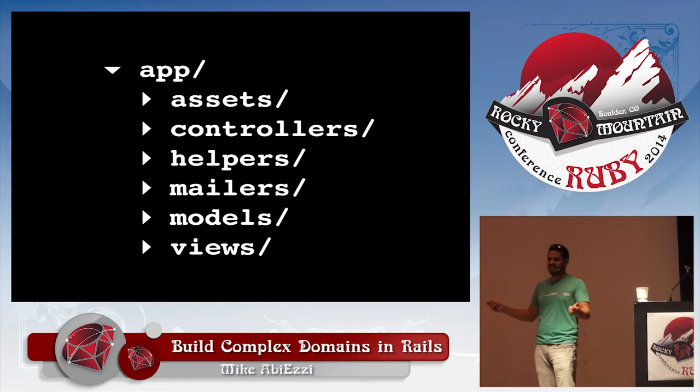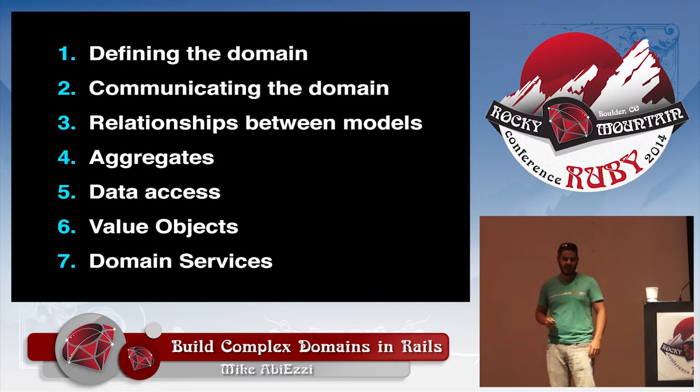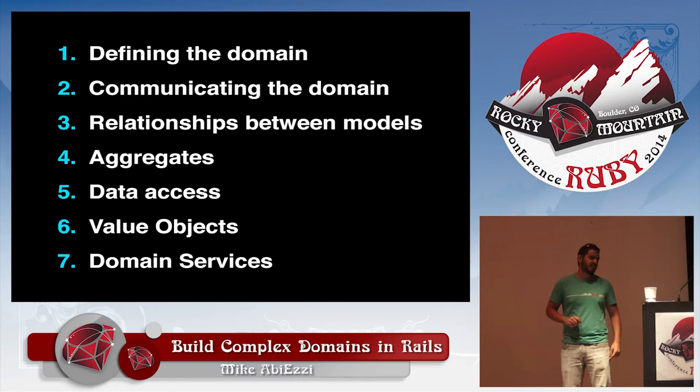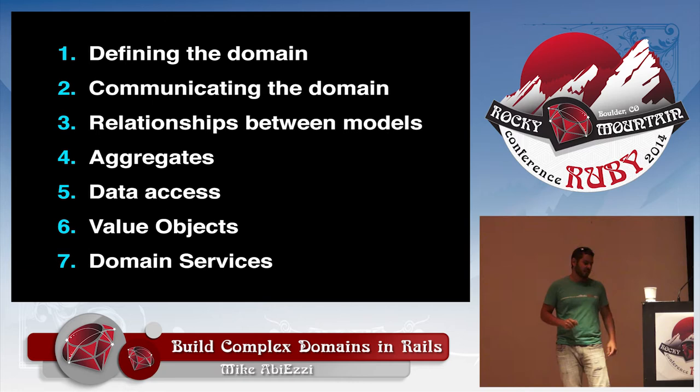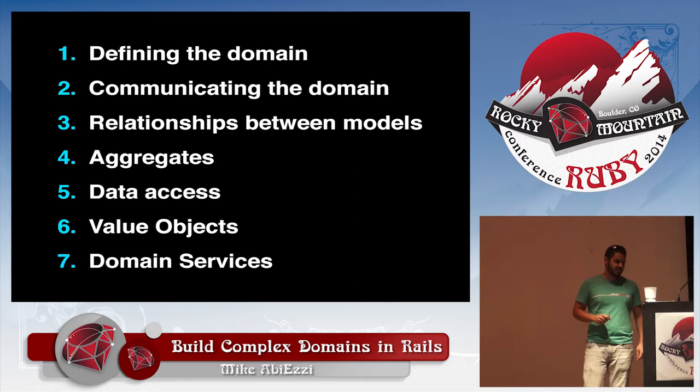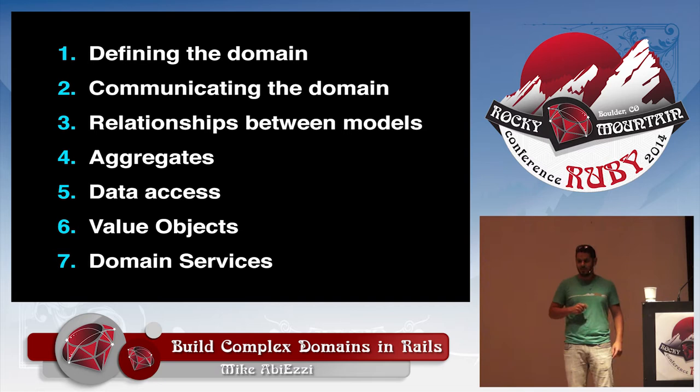We're going to talk through seven topics. The first is how do we go about defining the domain and what that process is like. We'll talk about how communicating the domain is important, especially with a large team. Then we'll talk about relationships — why they're important and why they're not. And we'll talk about aggregate state, access value objects, and domain services — what all those things are and how to implement them in a Rails app.